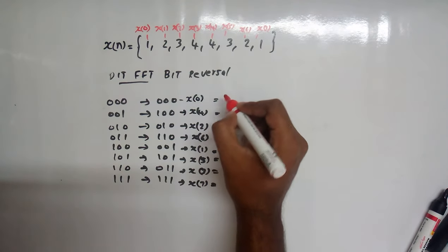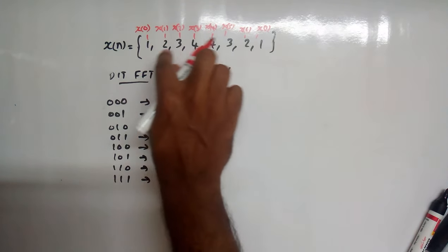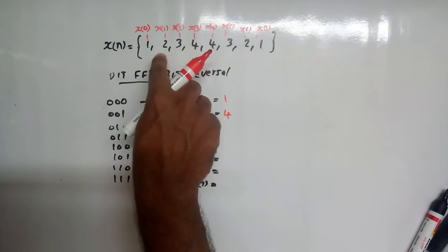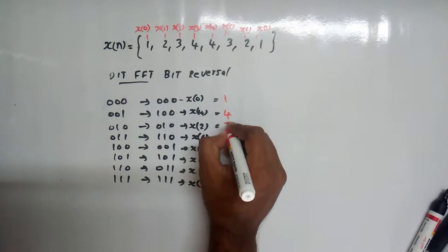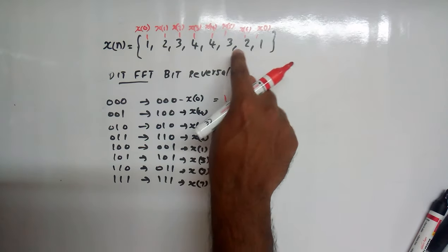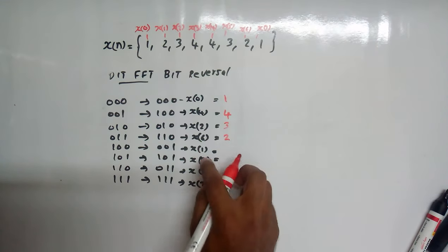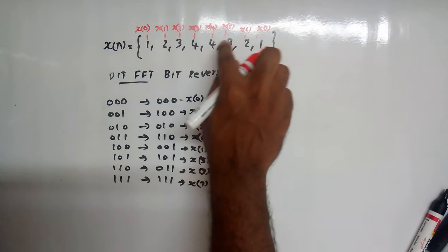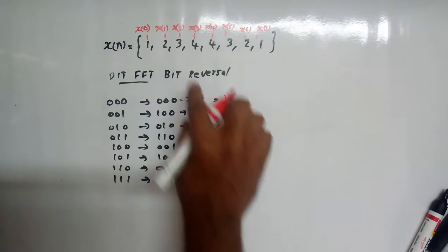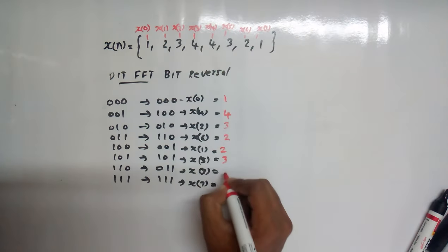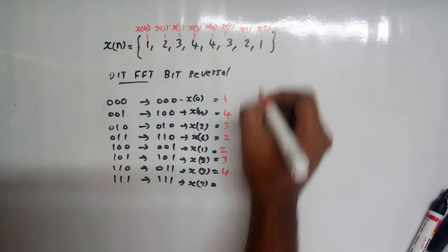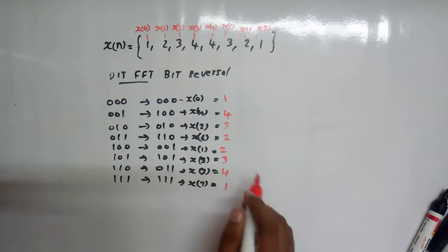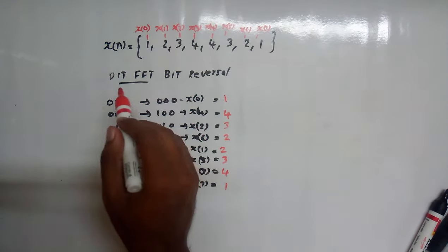So we know x(0)=1, x(4)=4, x(2)=3, x(6)=2, x(1)=2, x(5)=3, x(3)=4, and x(7)=1. We have to start with these terms for drawing the butterfly diagram in DIT-FFT.